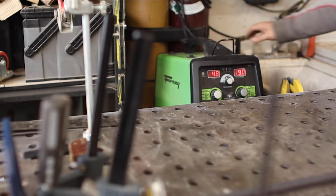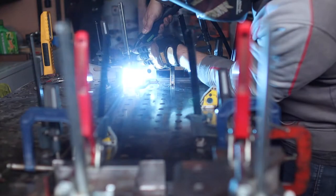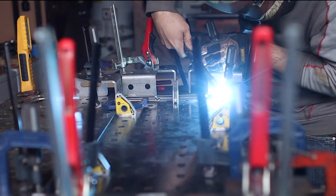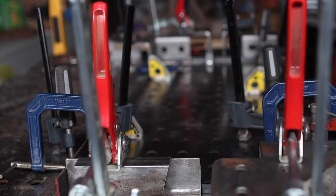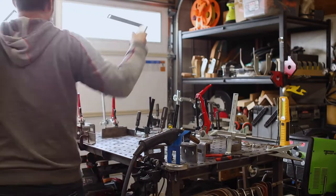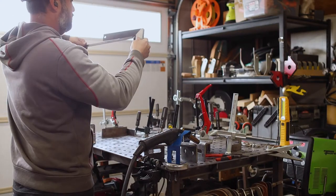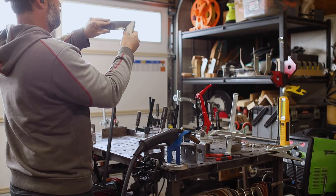Using my Forney 140 MP welder I used the MIG process to tack the corners together. When I pulled it out of the jig I checked it for square and it was all good.